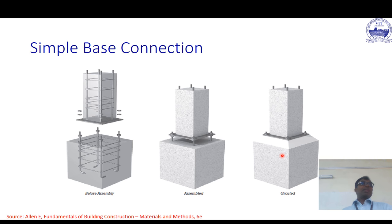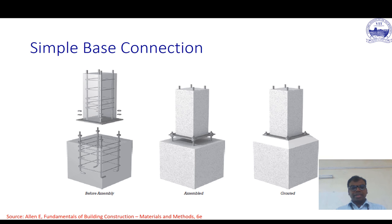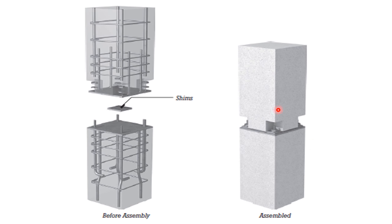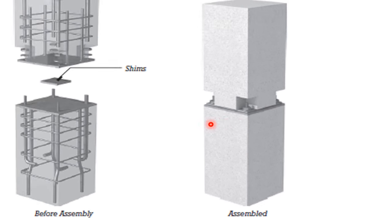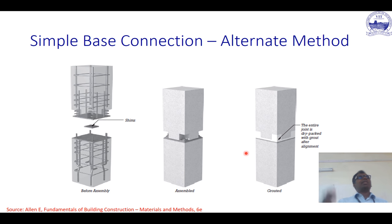Grout is a very costly item, so you try to reduce the thickness because beyond a particular limit it doesn't play any role. You can see the column has four vertical rods protruding out. The column from above has pockets or recesses made, and that comes and sits exactly where this is kept. There is a plate which goes beyond; you bolt the plate, and the column above also gets connected. This area is then grouted.